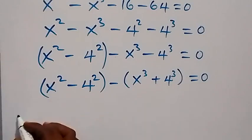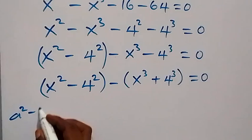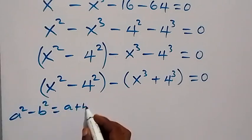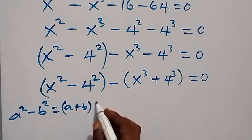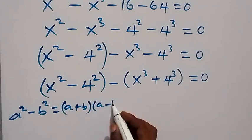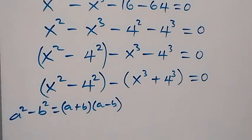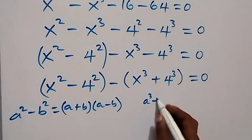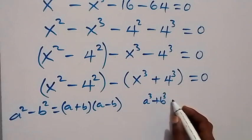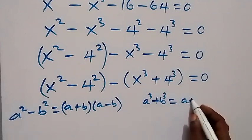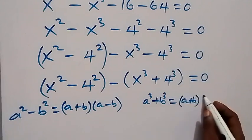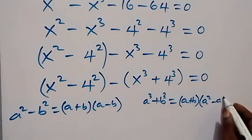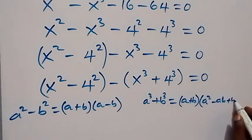This follows the difference of two squares: a squared minus b squared gives us a plus b times a minus b. For the sum of cubes, a cubed plus b cubed gives us a plus b times the bracket a squared minus ab plus b squared.